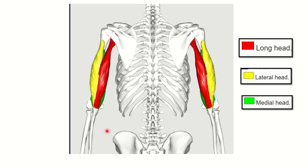First, we need to find the triceps muscle. The triceps is one of the muscles of the arm, and it contains three heads — that is where the name triceps comes from. It has a long head, a lateral head, and a medial head. The long head arises from the infraglenoid tubercle, then there is the lateral head, and the medial head lies below the other two.